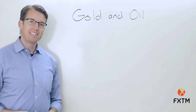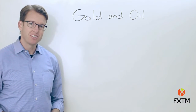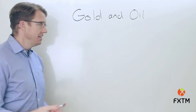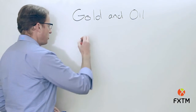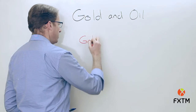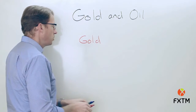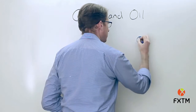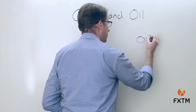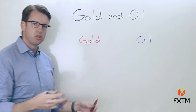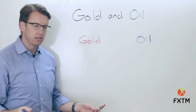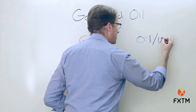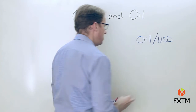In this episode of the FXDM educational series we're going to be taking a closer look at trading gold and oil. What I'm going to do is write down gold over here and then oil over here. Something I find very useful and helpful in understanding how these two relate to the dollar is to actually compare them to the dollar as if they were a currency pair.